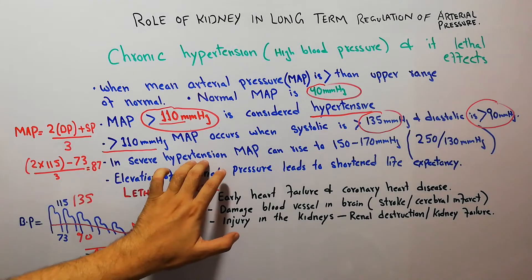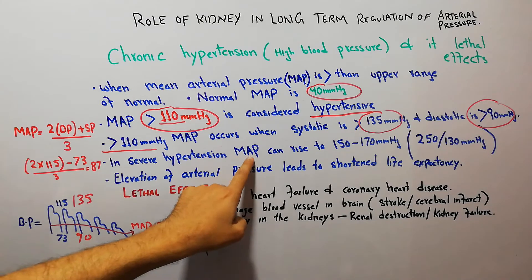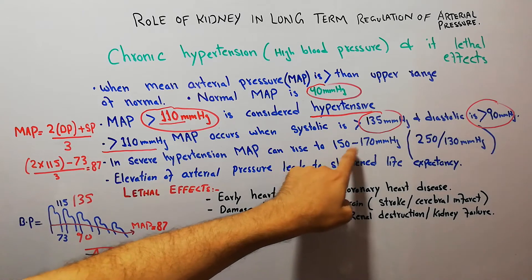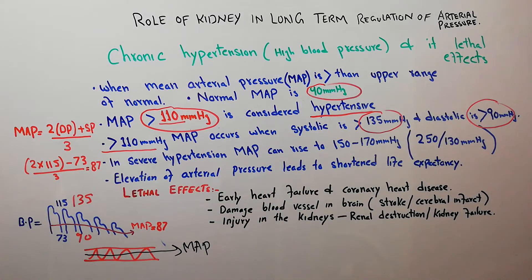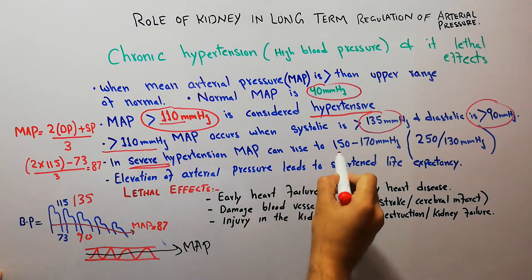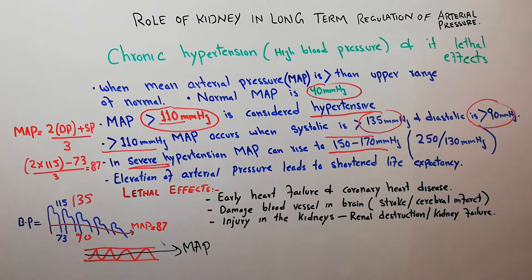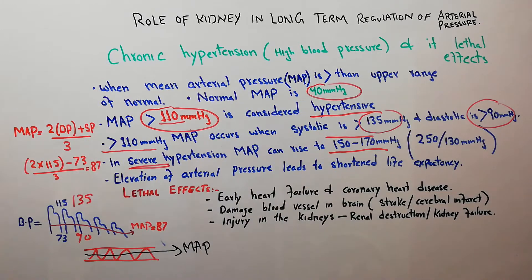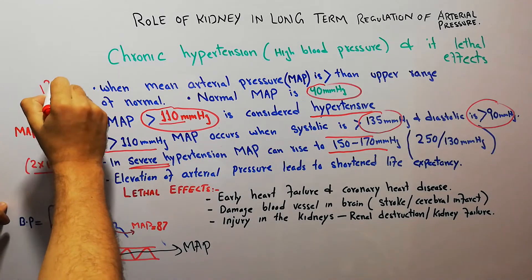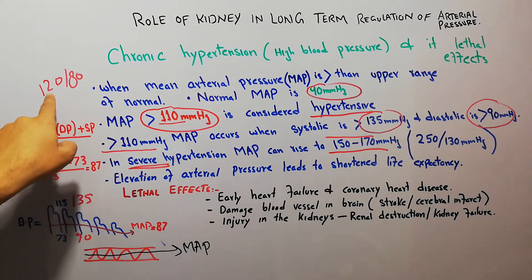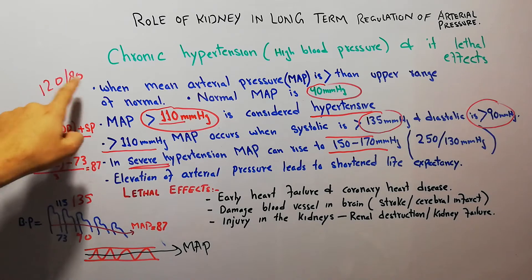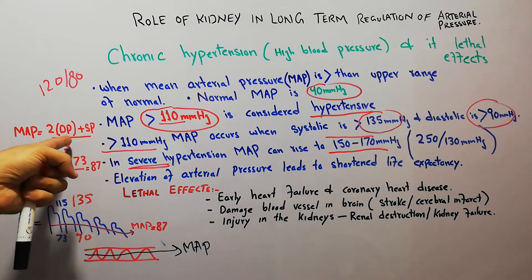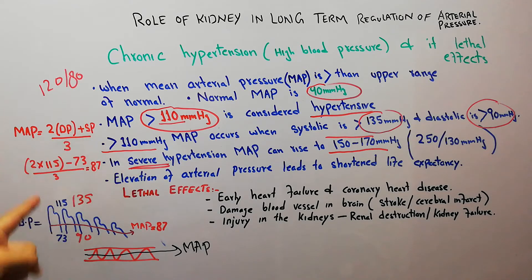In severe hypertension, the MAP can rise up to 150 to 170 millimeters of mercury. Normal MAP is 90 mmHg, while normal blood pressure is around 120/80. Blood pressure gives the measurement of systolic and diastolic pressure, whereas MAP is calculated using the formula with those values.